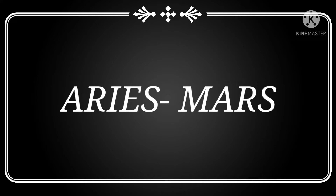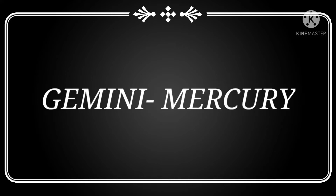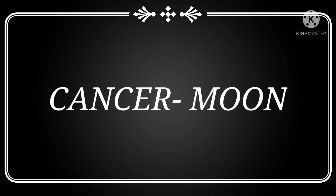The first zodiac sign is Aries and the ruling planet of this particular zodiac sign is Mars. The second zodiac sign is Taurus and the ruling planet of this sign is Venus. Third is Gemini and the ruling planet is Mercury. Fourth is Cancer, ruling planet Moon.